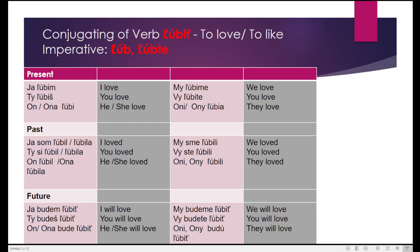But if I am a woman, the ending 'a' is added: Ja som ľubila. The same for the second person: Ty si ľubil — if I talk to a man. Ty si ľubila — if I talk to a woman. The same for the third person: On ľubil — he loved. Ona ľubila — she loved. For all plurals, 'i' is added: My sme ľubili. Vy ste ľubili. Oni ľubili — Oni for men, Only for women.